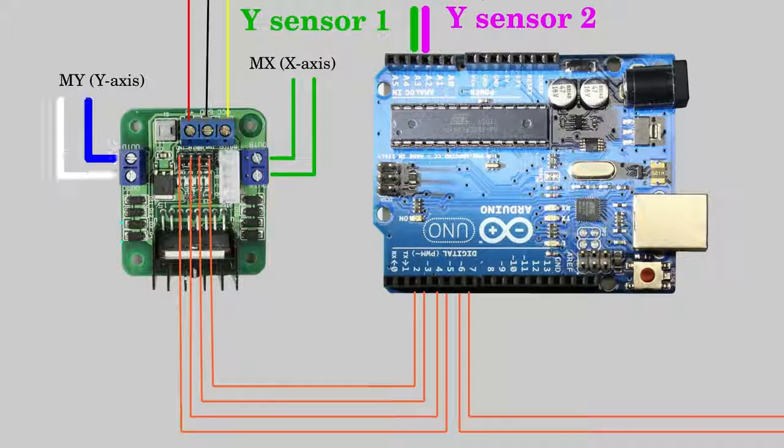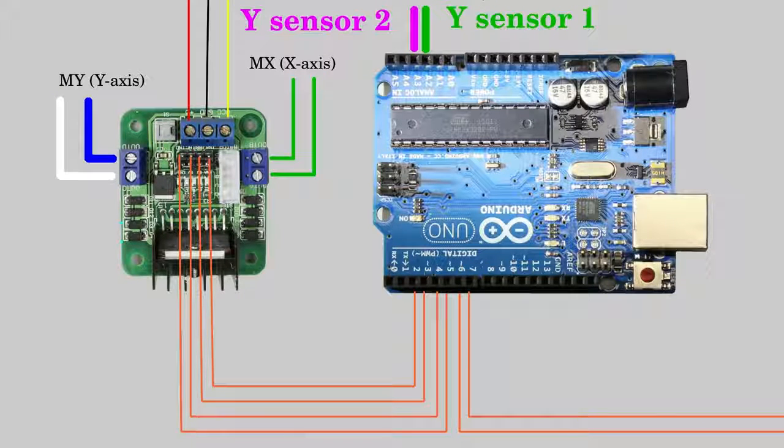If the movement is reversed, swap the cables running from the H-bridge to the motor of the Y-axis and the two cables running from the Y-sensors to the Arduino.